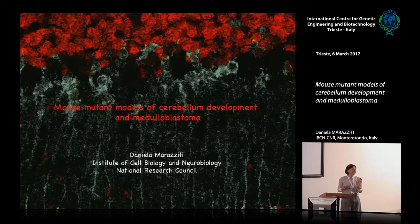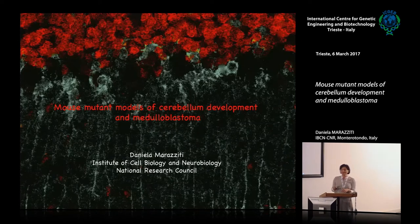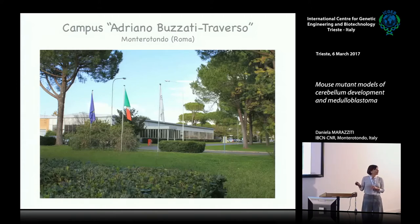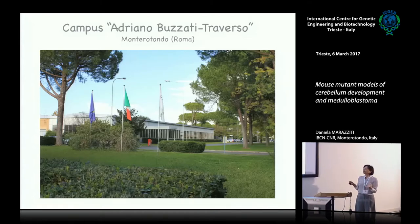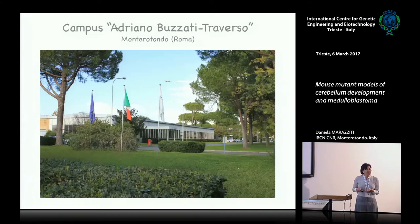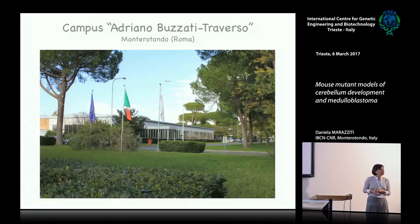All the talk will be centered only on proliferation — so it's only one topic. We are in the Monte Rotondo campus, that is in the countryside north of Rome, and we are in an international environment, thanks to the vision of Glauco, that put together many international entities, ranging from the mouse mutant archive to European Molecular Biology Outstation.